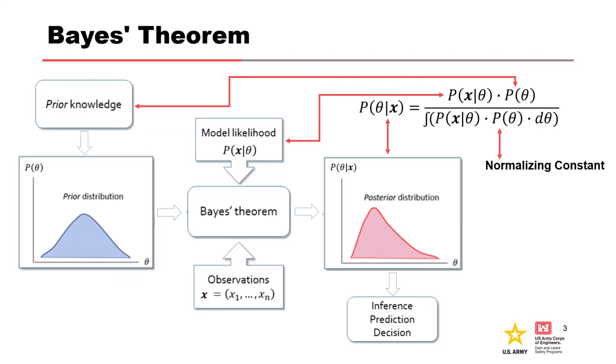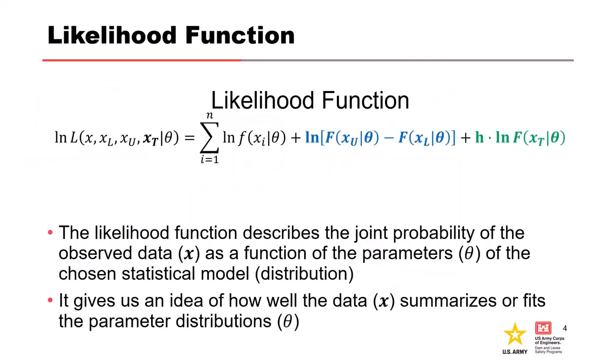There's complexity within that, but for the likelihood function we've converted everything using ln to log so that we can add it all up. We have the likelihood of the systematic data given our model, the likelihood of our interval — upper minus lower given the data — and our perception threshold: the number of years H times that upper limit. That is our likelihood function — the joint probability of the observed data as a function of the parameters of the chosen model, which in our case is LP3 for the most part.